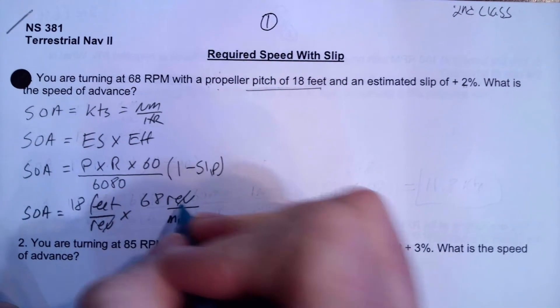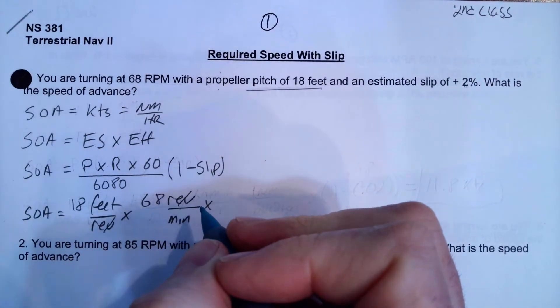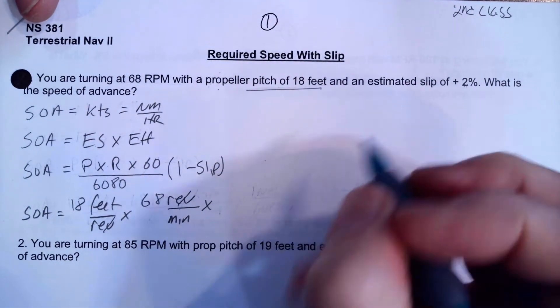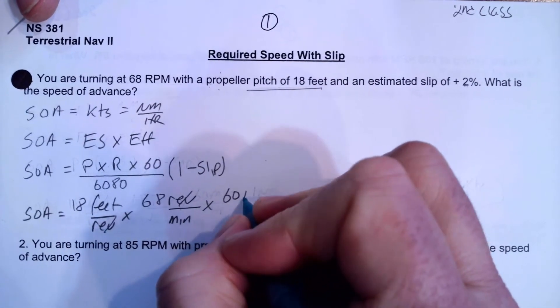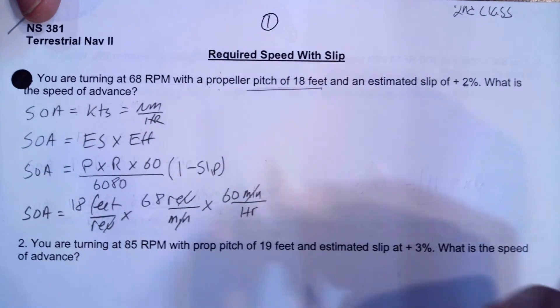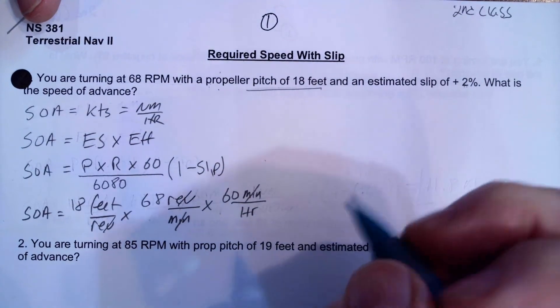And then we're going to multiply by our slip. 60 minutes per hour. We need to do that, and that is going to give us our actual engine speed.